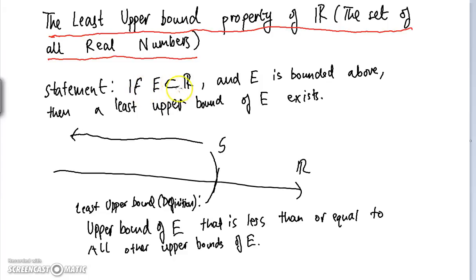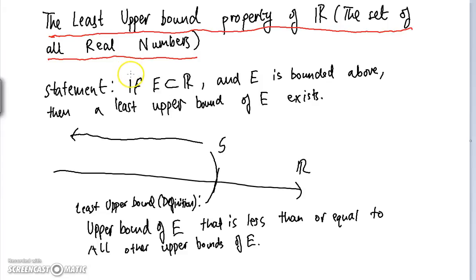If we do have a subset of the real numbers which is bounded above, then there exists a number that is the least upper bound of this subset. We're not going to prove this statement in today's video, but the proof is essentially a construction of the real numbers using techniques which ensure that the least upper bound property holds. We're going to be assuming this statement in this series of videos.